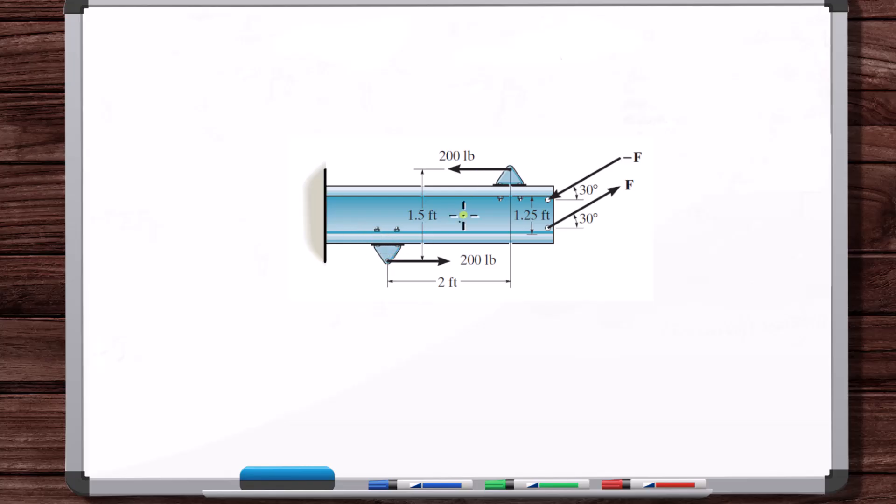regardless of if you analyze the system with the forces like shown here, or you convert each of these force pairs to couple moments and put those couple moment vectors wherever you want on the beam, the resulting analysis of the statics problem is going to be the same. You're going to get the same reaction forces here. And so that's it.